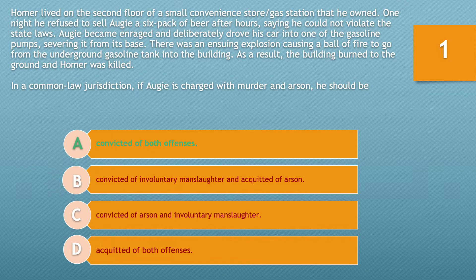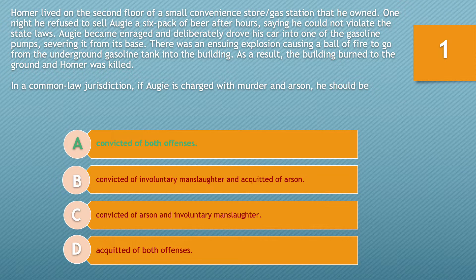Therefore, Augie should be convicted of arson, given that this was his home. Since Homer's killing was during Augie's commission of the felony of arson, Augie can be convicted of murder under the felony murder rule, because Homer's death was reasonably foreseeable, as Augie had just left Homer inside the convenience store and obviously knew he was there. Alternatively, Augie can be found guilty of murder even without the arson felony, as Augie clearly acted with wanton and willful disregard of human life by running his car into a gas station, which resulted in Homer's death.